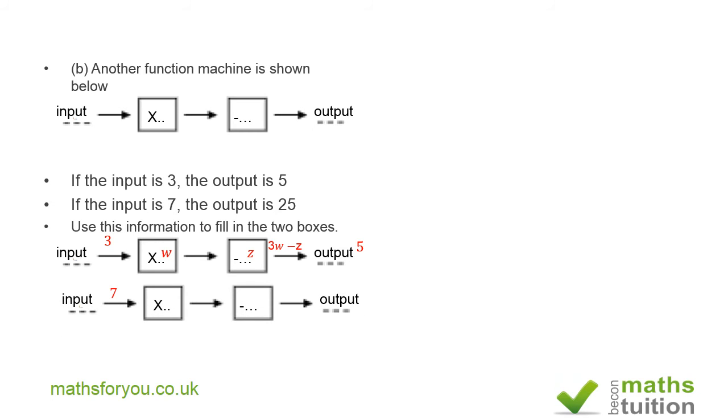If we then input 7, and multiply by w, and subtract z, we end up with 7w minus z being an output, and that's equal to 25. So we now have two equations. 3w minus z is equal to 5 as the first equation. And 7w minus z is equal to 25.